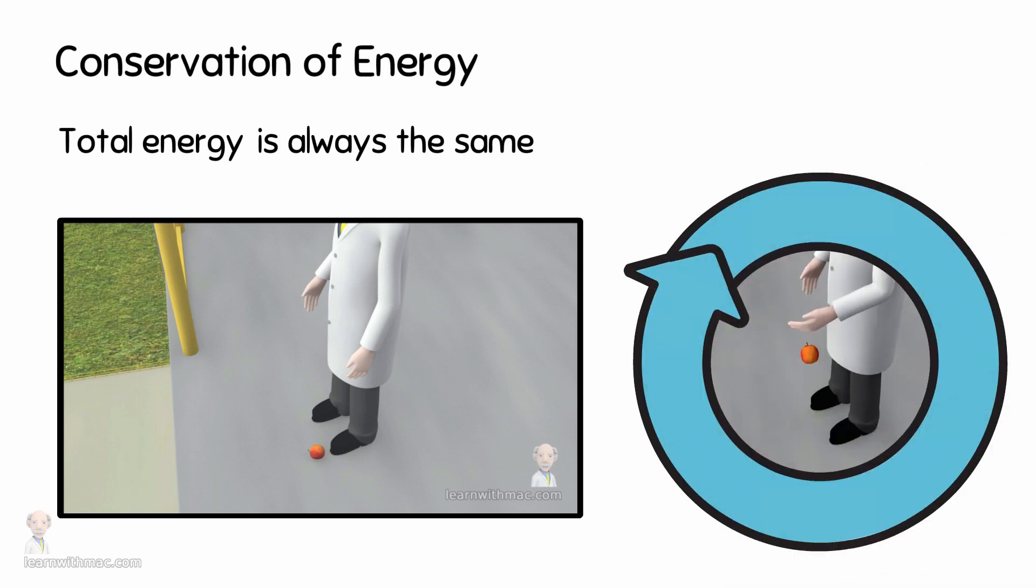When I drop the apple it falls to the ground under the action of the gravity force. Now using our knowledge of work and energy we can predict the velocity of the apple just before it hits the ground, and when we do this it is going to reveal something quite extraordinary.